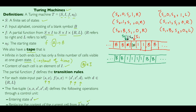So the final tape situation is 1 1 1 1 1 B. In other words, if we had the initial tape condition B B 0 0 1 1 B B, this Turing machine transforms it so the non-blank portion of the tape looks like 1 1 1 1 1.